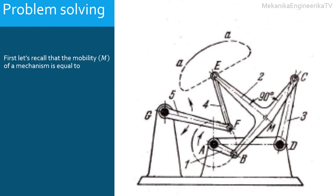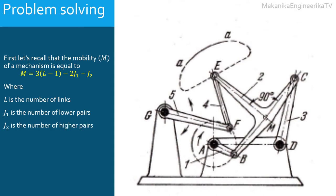First, recall that the mobility M of a mechanism is equal to 3 times L decreased by 1 minus twice J1 minus J2. Where L is the number of links in the mechanism, the number of mechanical parts in the mechanism. J1 is the number of lower pairs, the number of kinematic pairs that allow each 1 degree of freedom. And J2 is the number of higher pairs, the number of kinematic pairs that allow 2 degrees of freedom each pair.